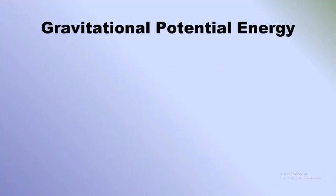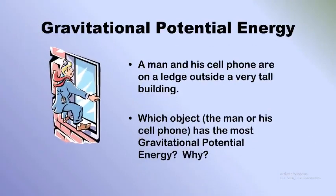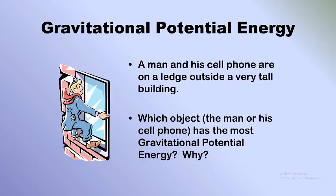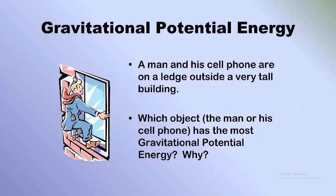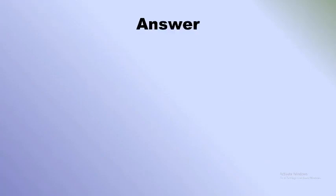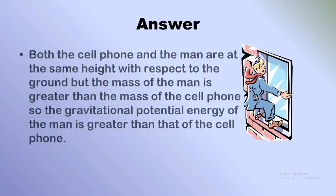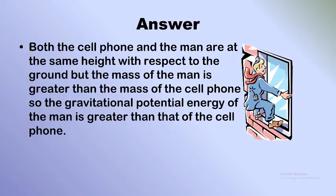Another question: a man and his cell phone are on a ledge outside a very tall building. Which object — the man or his cell phone — has the greater gravitational potential energy, taking the ground as the reference? The man and the cell phone are at the same height above the ground, but the variable here is mass. The mass of the man is greater than the mass of the cell phone, so the gravitational potential energy of the man is greater. Therefore, GPE also depends on mass.